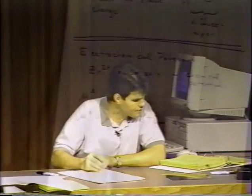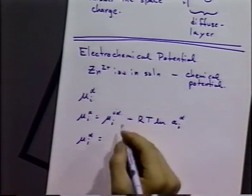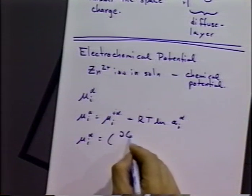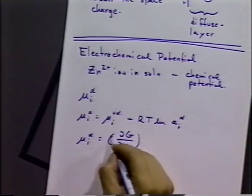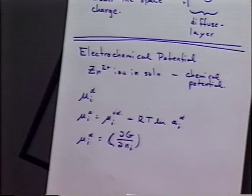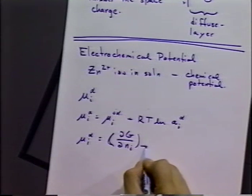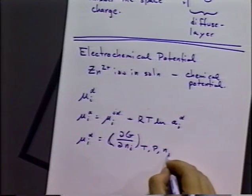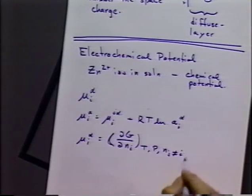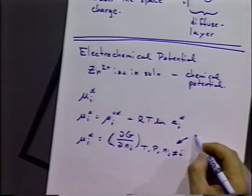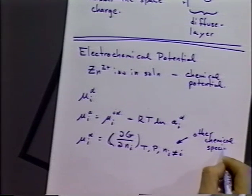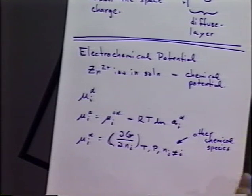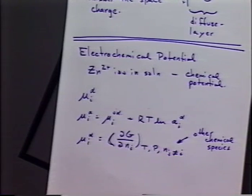For a given chemical potential, we can consider that to be the partial differential of the Gibbs energy versus the infinitesimal change in the amount of that particular species I, when we hold temperature, pressure, and any other amounts of other species in the system constant — where N sub j would be other chemical species. So it's just the partial derivative of the free energy with the amount of species I, holding other quantities constant.